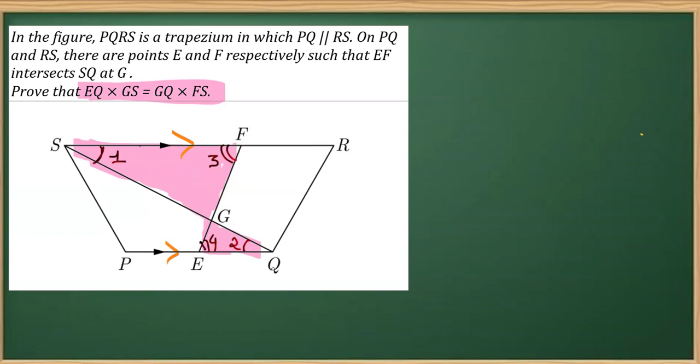This way we can make the two triangles similar. So let's begin with the working. We'll consider triangle 1 as triangle EQG and the other triangle is FSG.